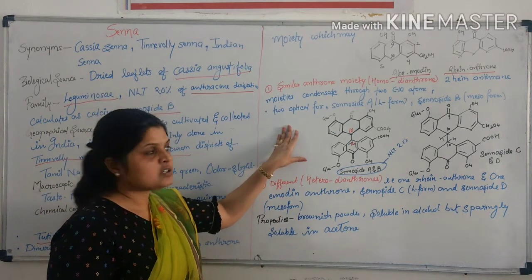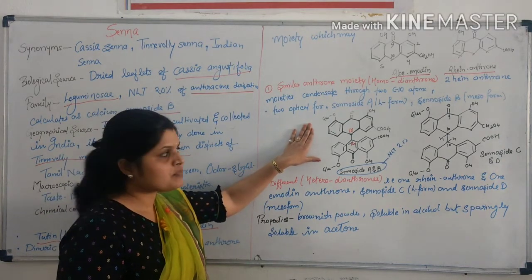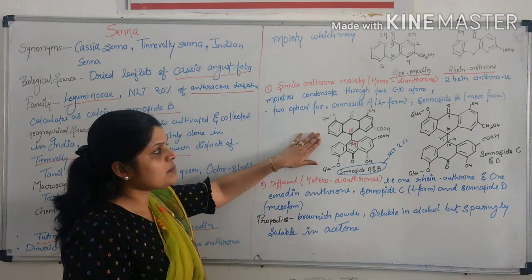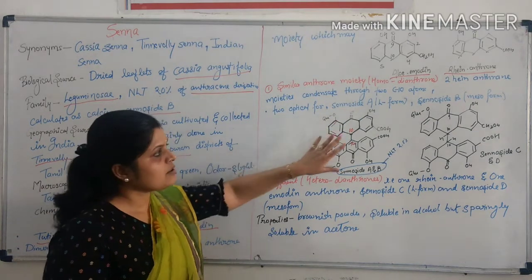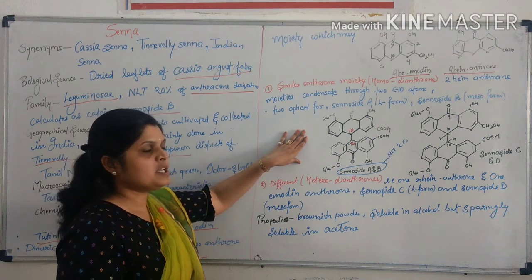It exists in two optical forms. When it is available in anthrone form, then it is called sennoside A. When it is available in meso form, then it is called sennoside B.